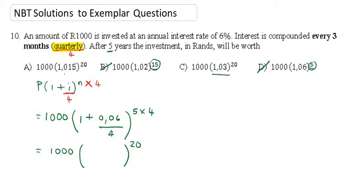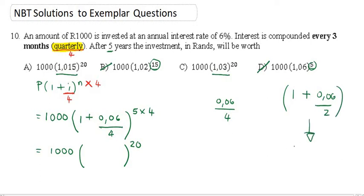So here is the difference between A and C. Is it going to be 1.015 or 1.03 in the bracket? Well, if we think smart about this, we won't have to work out what 0.06 divided by 4 is. If this was compounded semi-annually, in the bracket it would be 1 plus 0.06 divided by 2. Would you be able to work that out? That's much easier.